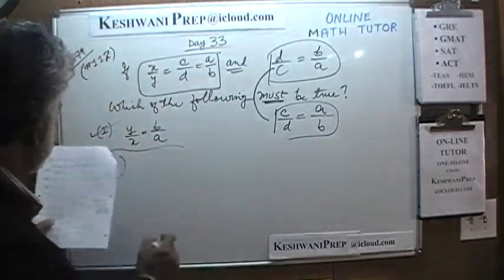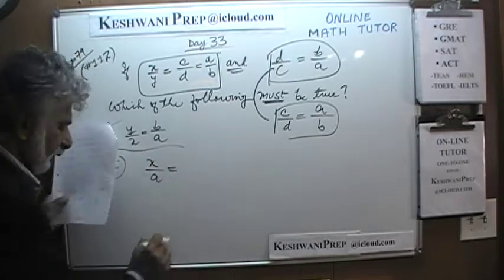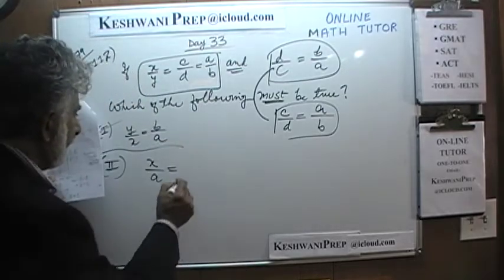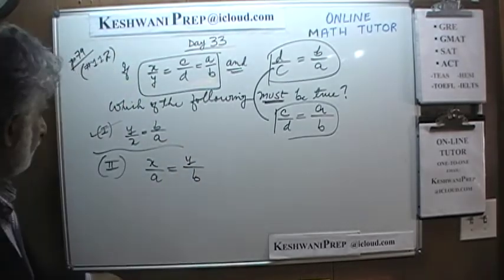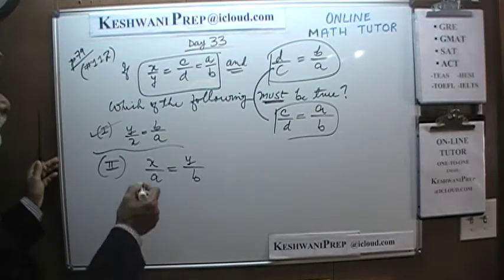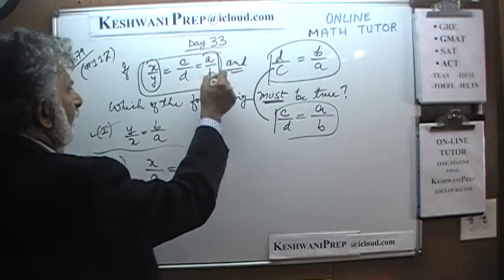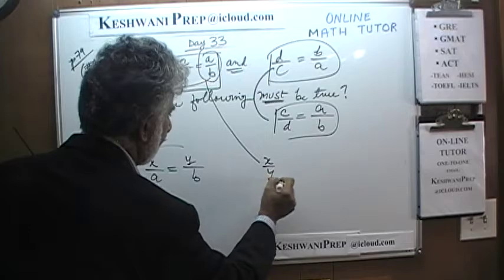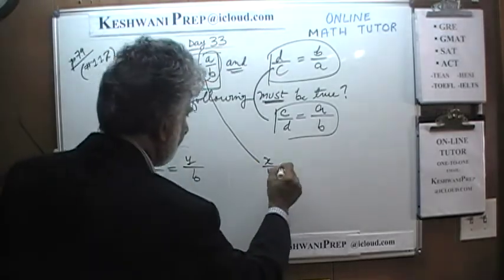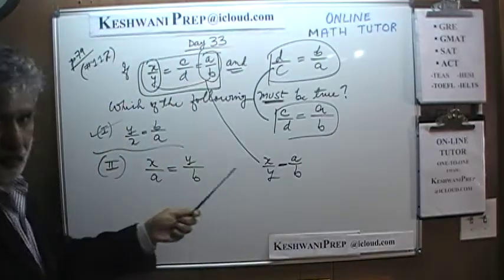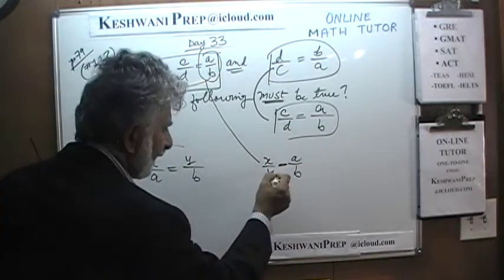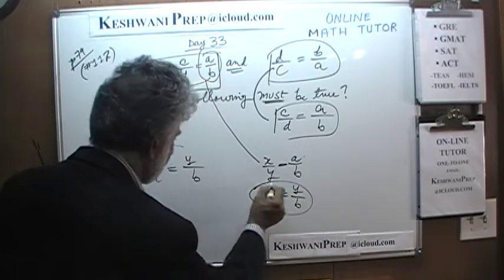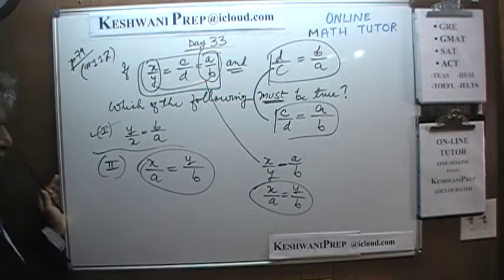Statement 2 says x/a = y/b. From x/y = a/b, if we cross-multiply — bringing a down and y to the top — we get x/a = y/b. That is exactly what statement 2 says. Statement 2 is also true.